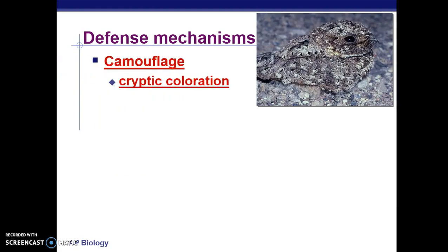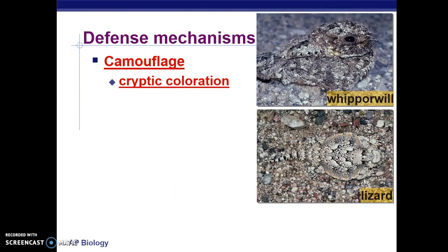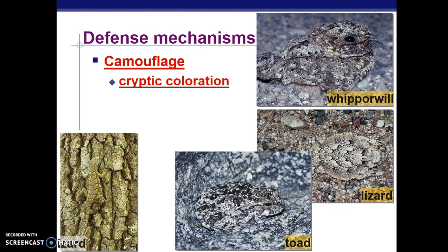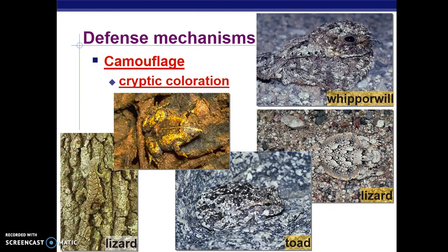One of the first examples of adaptations that prey have developed is camouflage. The organism blends in with its environment. You can see examples here: there's a bird, a lizard, a toad, a frog, and another lizard. They develop colorations that allow them to blend into their environment and make them less likely to be seen by predators.